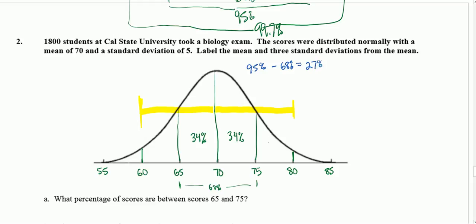95 minus 68 is 27. So 27 is the two areas, this part right here between 75 and 80 and also the part between 60 and 65. Both those are, it's symmetric, so those are the same area. I'm going to cut that 27 in half and I get 13.5. So we know this is 13.5% and 13.5%.